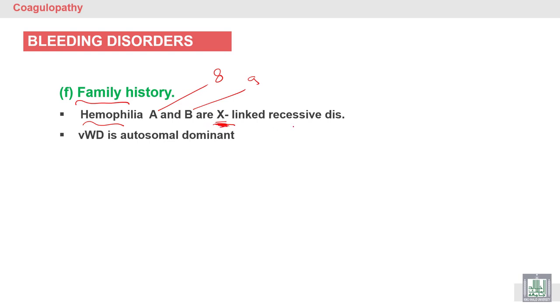While von Willebrand disease is autosomal, the genes of the von Willebrand factor are present on the non-sex chromosome, so it's called autosomal and dominant. But both hemophilia A, B, and von Willebrand disease may present in families. So it is very important to know hemophilia and von Willebrand disease.